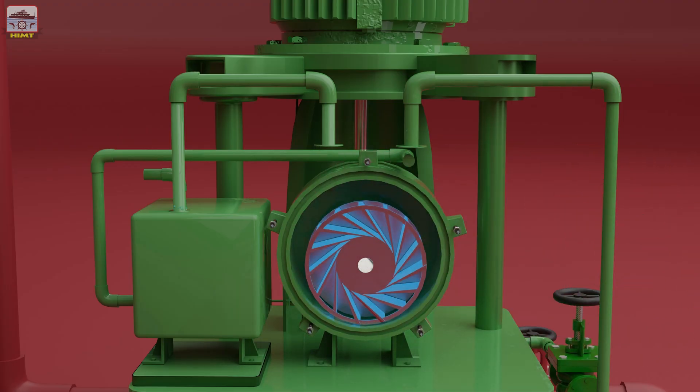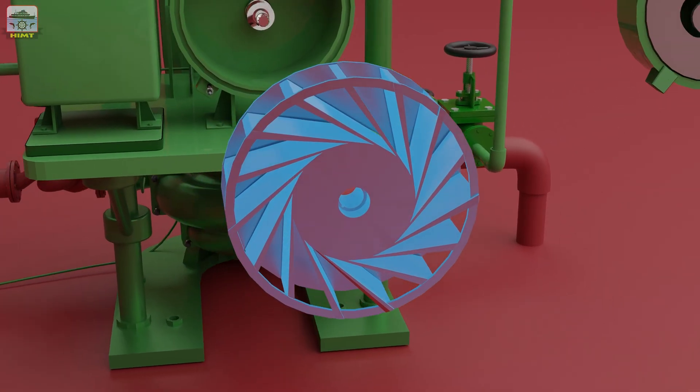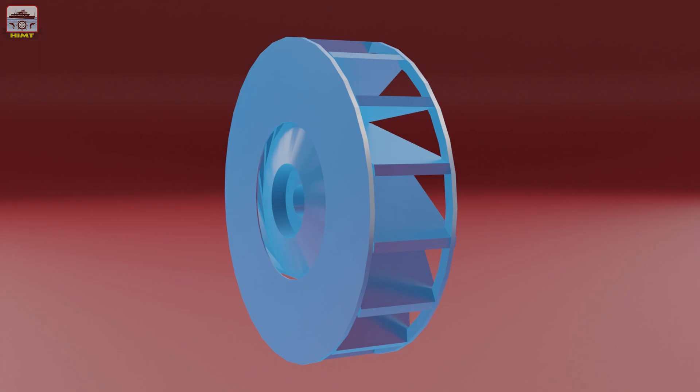The pump consists of an impeller which is placed eccentrically inside the casing. The impeller has forward curved vanes which are shrouded on one side.